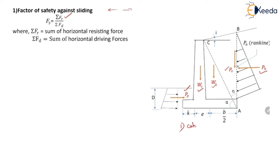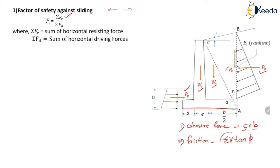The first force is cohesive force, acting at the base of the retaining wall. Total cohesive force equals C times B, where C is the cohesion per unit length and B is the total breadth of the retaining wall. Another force which comes into picture is the force of friction between the retaining wall and the underlying soil. This force of friction equals ΣV·tan(φ), where ΣV is the sum of all the vertical forces: WC, WS, and PV, and φ is the angle of frictional resistance.